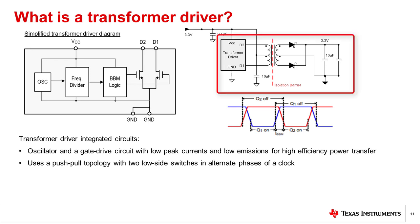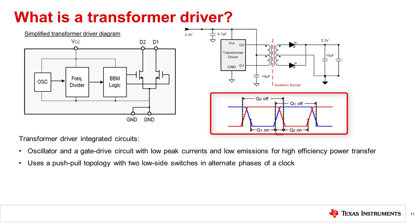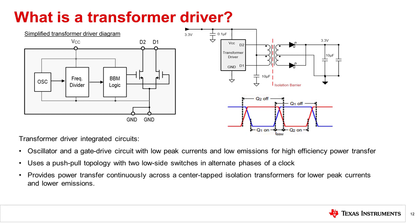Transformer drivers use a push-pull topology, which can benefit low-noise applications. This is because the topology uses two low-side switches that are on in alternate phases of a clock to transfer power continuously across a center tapped isolation transformer. The continuous power transfer results in a much lower peak current compared to other topologies, and in lower emissions and higher efficiency. The symmetric drive also prevents transformer saturation at the output of the device as long as the load is balanced, which can be accomplished by using transformers with equal turns above and below the center taps.